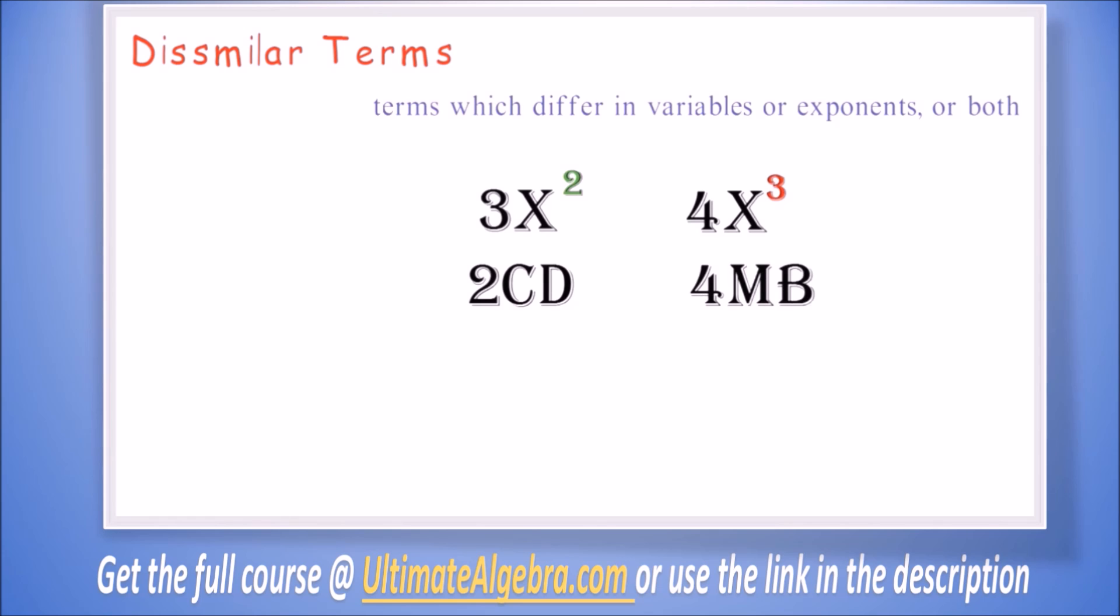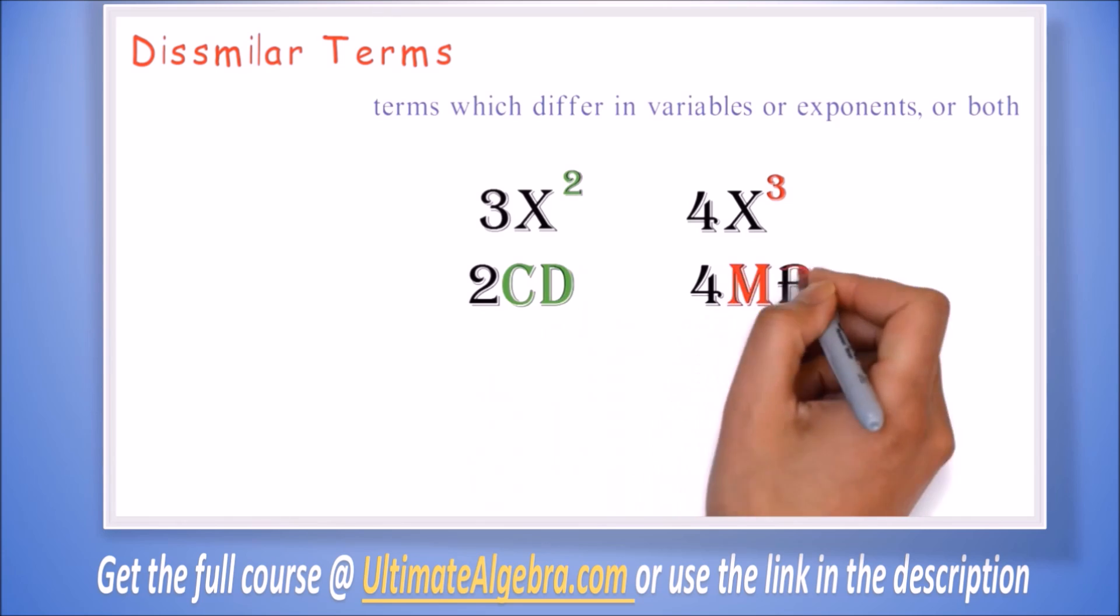Another example: 2cd and 4mb. Notice they have different letters, one is cd and the other mb, so they are dissimilar terms.